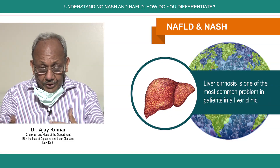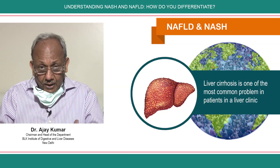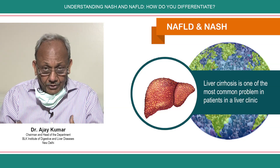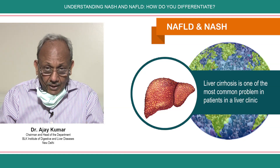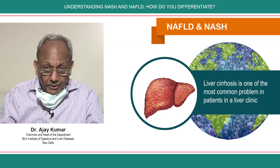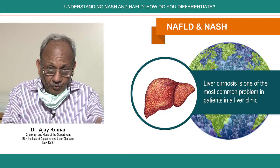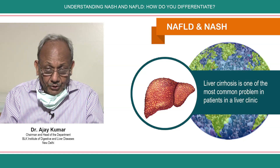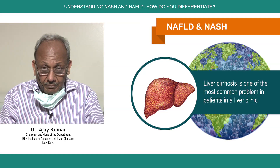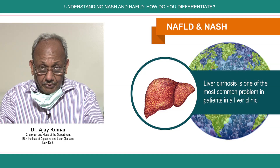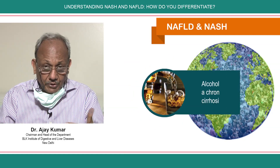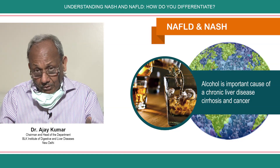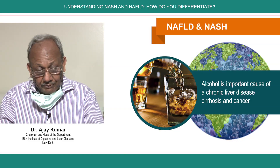Today sitting in a liver clinic, if we see all patients of liver cirrhosis, fatty liver has become a more important cause than even hepatitis virus B and C. We have already found a solution for B and C but we still do not have a clear solution for fatty liver. Of course, alcohol remains an equally important cause of chronic liver disease, cirrhosis, and liver cancer.